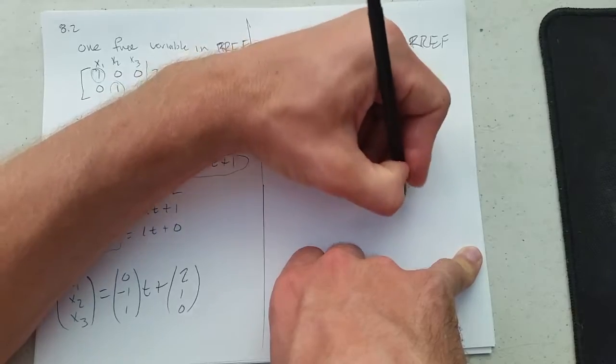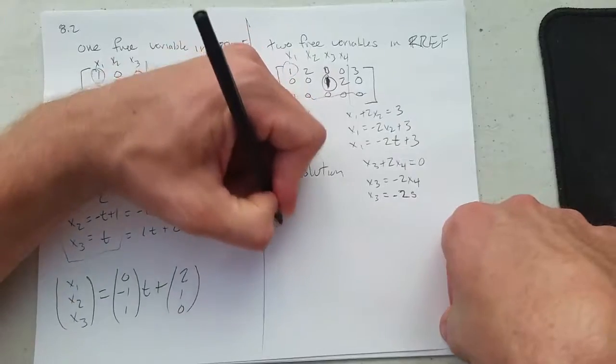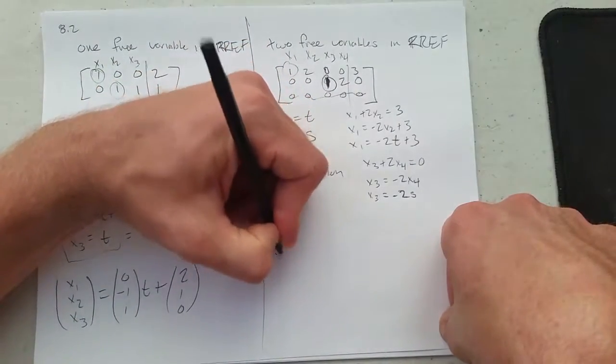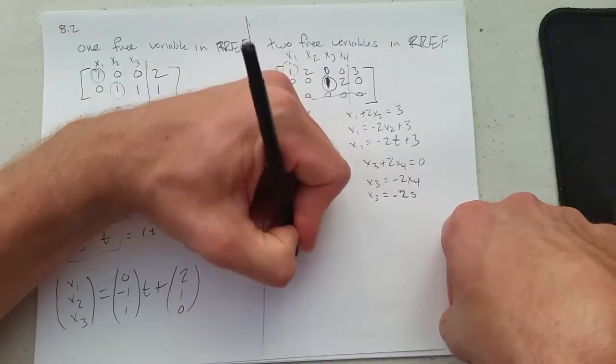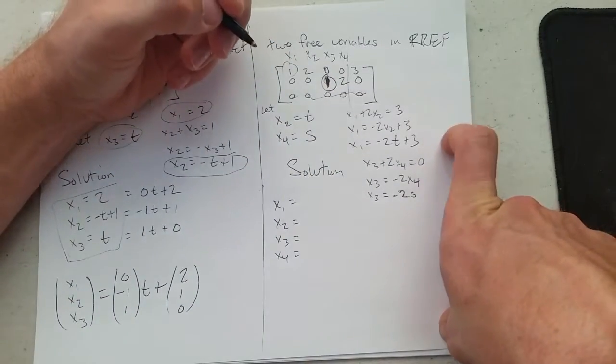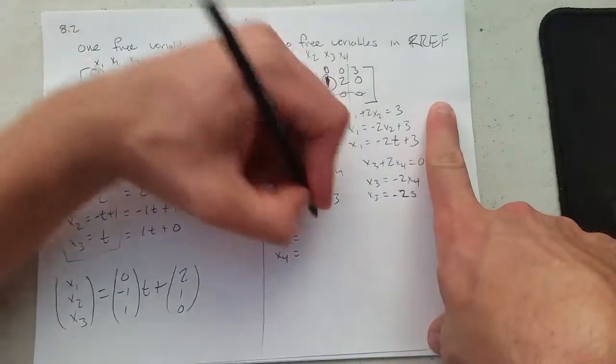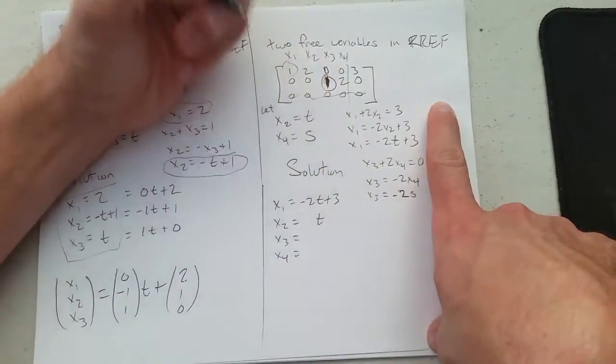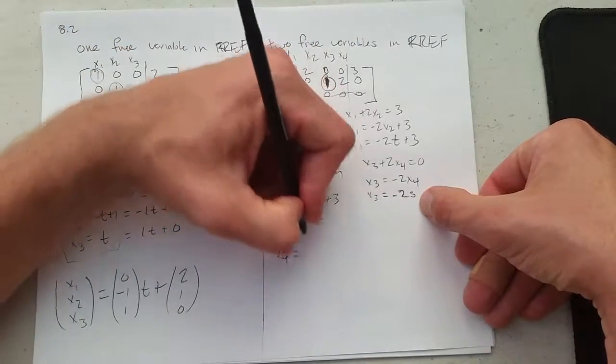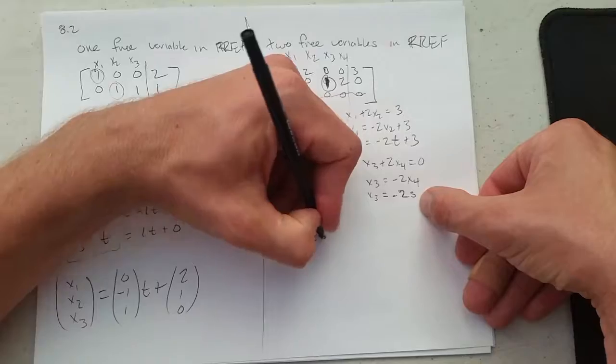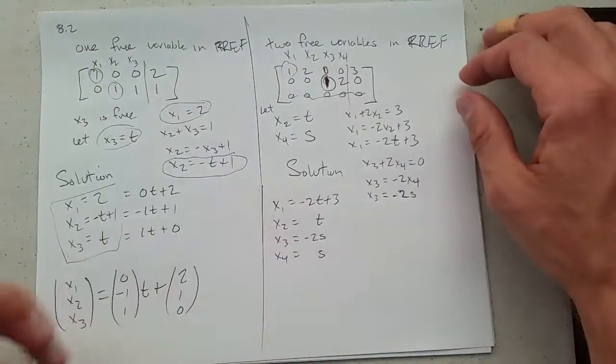So our solution, write them in order. x1 was negative 2t plus 3. x2 was t. x3 negative 2s. And x4 is regular 1s. There is our solution.